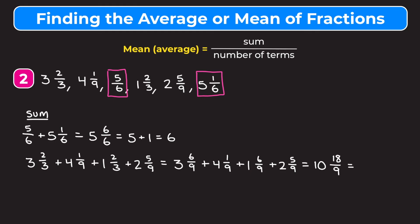And this is really the same as 10 plus 18 ninths. And 18 ninths simplifies to two, right? So this is really 10 plus two. So we get 12. So we get that the sum of five sixths and five and one sixths is six, and we get the sum of the remaining numbers is 12.